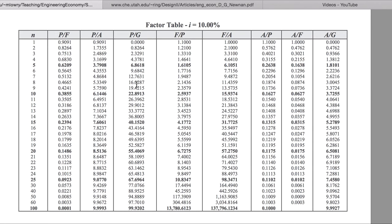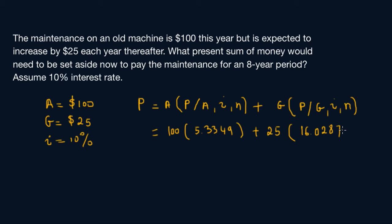Let me use a calculator. This is 100 times 5.3349 plus 25 times 16.0287, which equals $933.92.